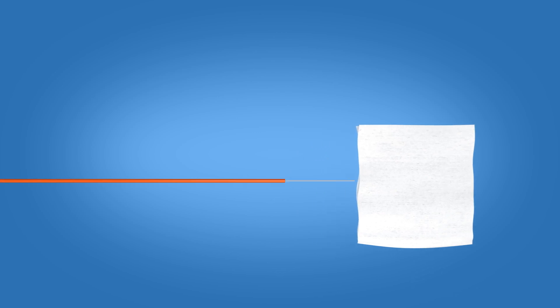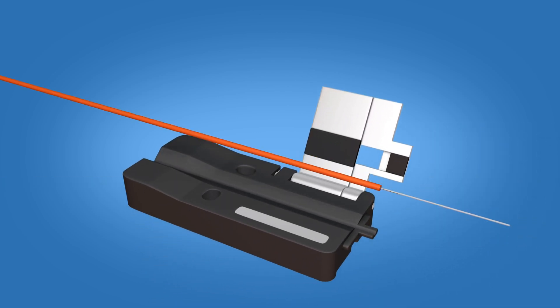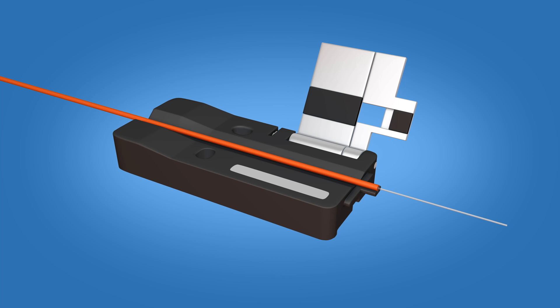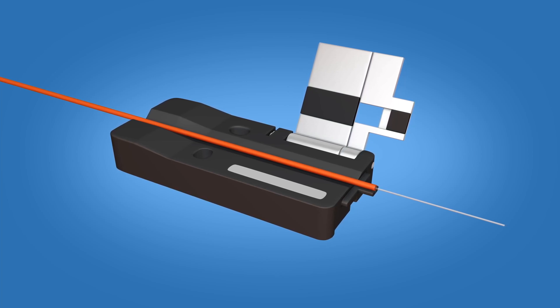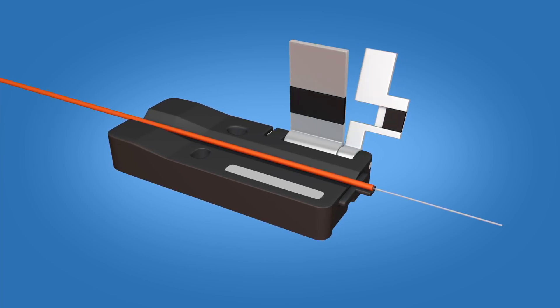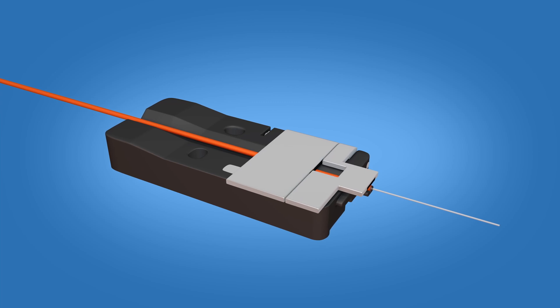Clean the fiber with a lint-free wipe and fiber preparation fluid. Place the fiber in the 900 micron fuse connect fiber holder with the end of the 900 micron coating at the end of the fiber holder. Close the fiber holder clamp.